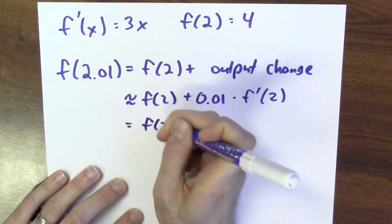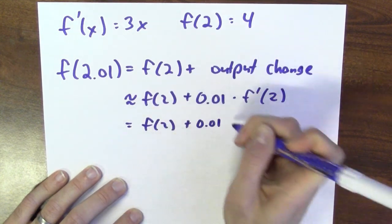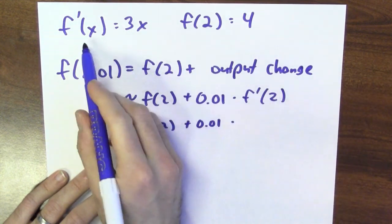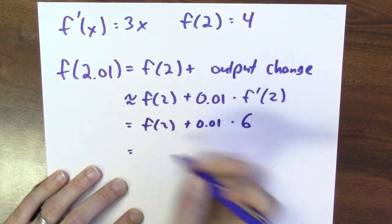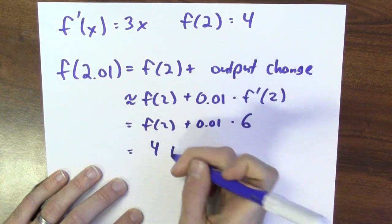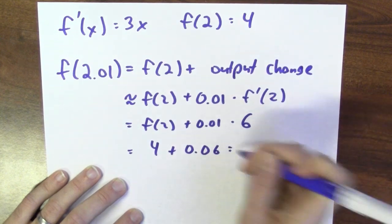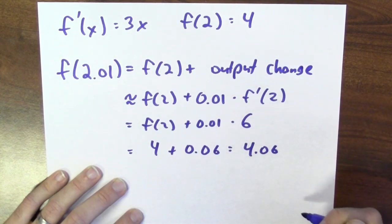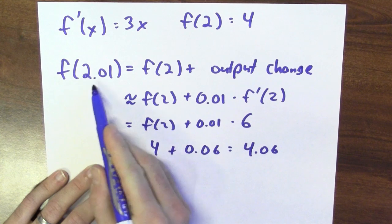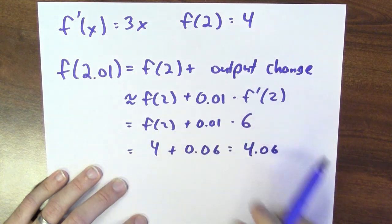Now, in this case, I know what these numbers are. 0.01 times the derivative of f at 2 is 6. Which means that this is about 4 plus 0.06, which is 4.06. And that's about what this function at 2.01 is equal to.